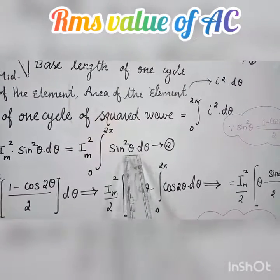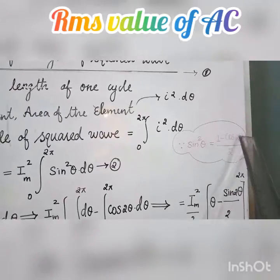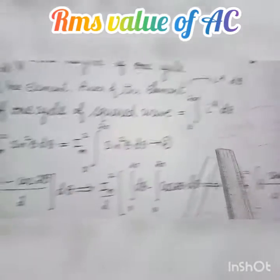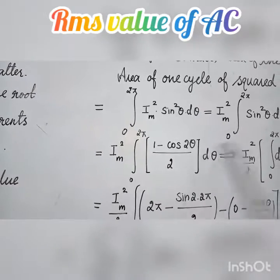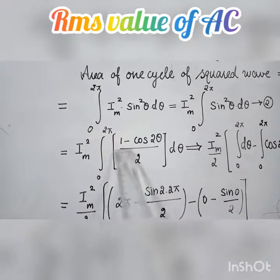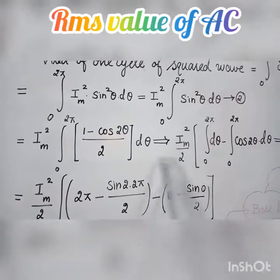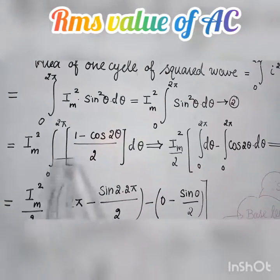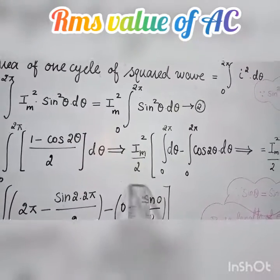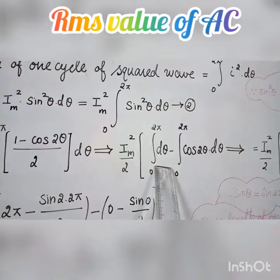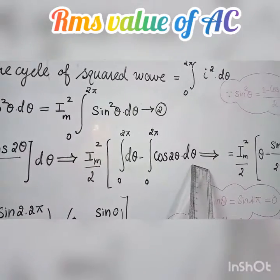Since sin²(θ) = (1 − cos2θ) / 2, we substitute this value. This gives I_m² times the integral from 0 to 2π of (1 − cos2θ)/2 dθ. Taking the 2 outside: I_m²/2 times the integral of [dθ − cos(2θ) dθ].